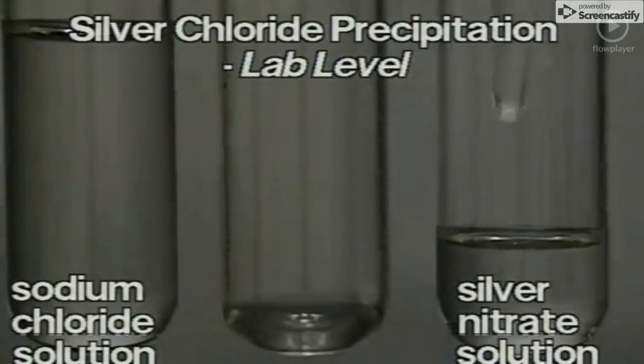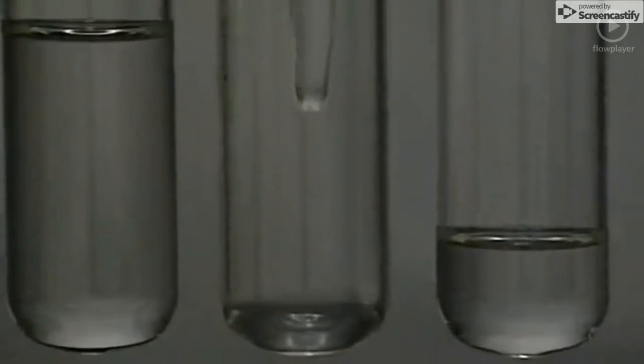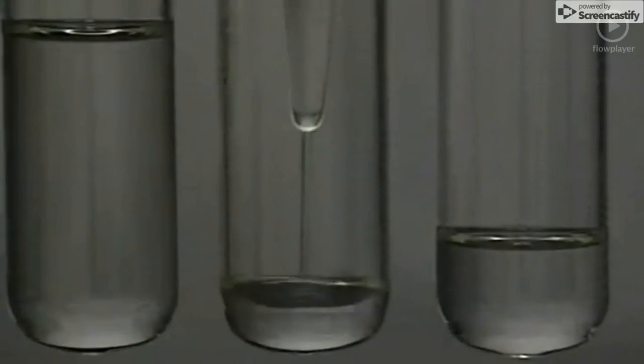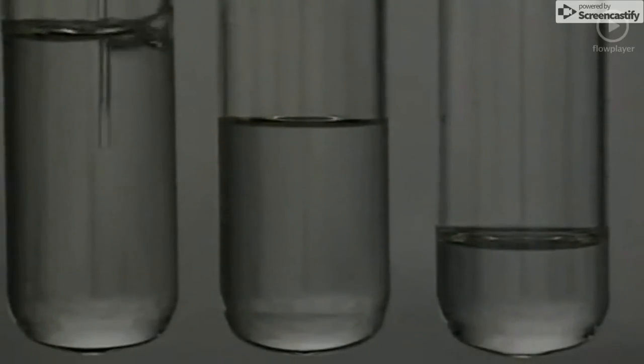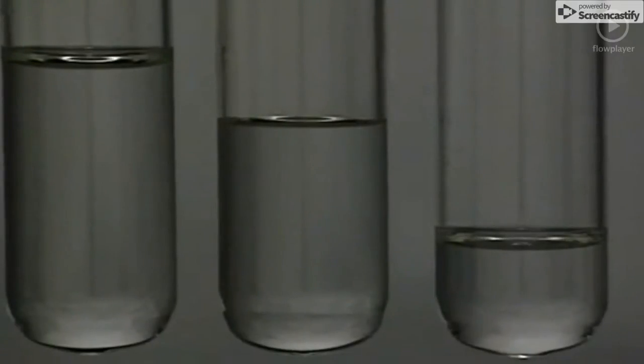In this reaction, we're going to add sodium chloride solution to silver nitrate solution. Instantly, a white precipitate forms.